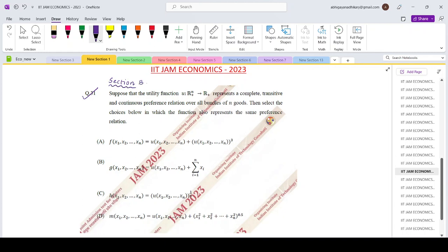The question says suppose that any utility function from R^n plus to R plus represent a complete transitive and continuous preference relationship over all bundles. Then select the choices below in which the function also represents the same set of relations.